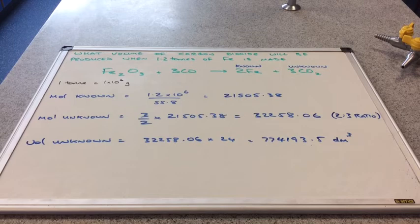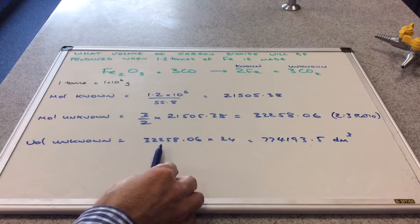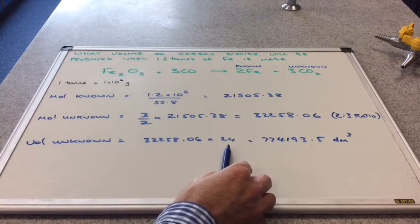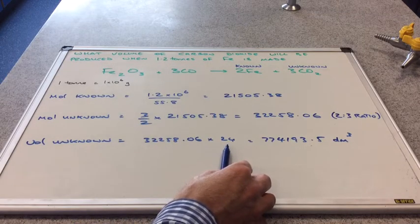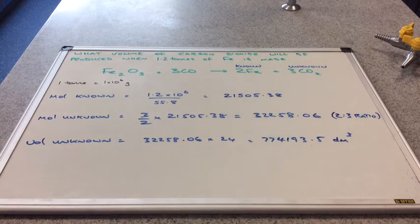And then converting that into a volume, remember we need to find out the volume of carbon dioxide. So we multiply the moles of carbon dioxide by the volume of 1 mole, which is 24 decimeters cubed. So we get 774193.5 decimeters cubed.